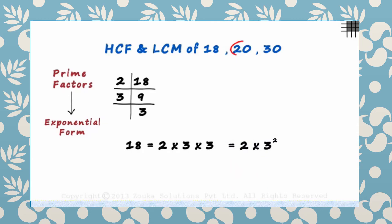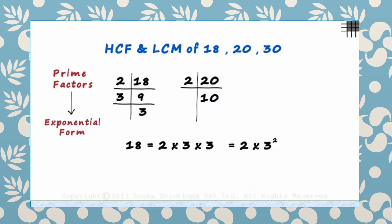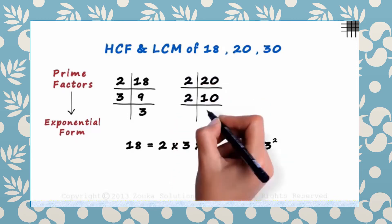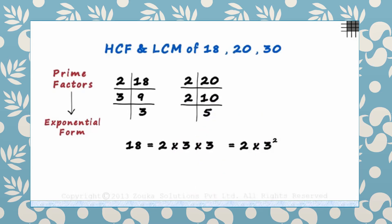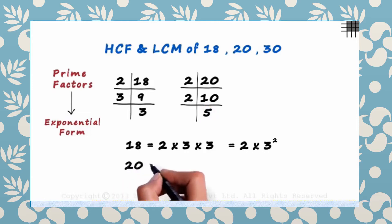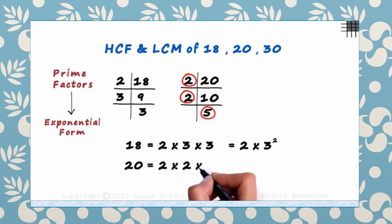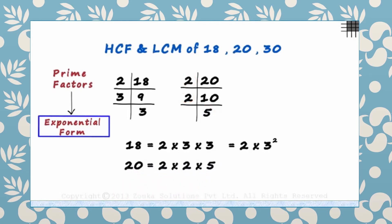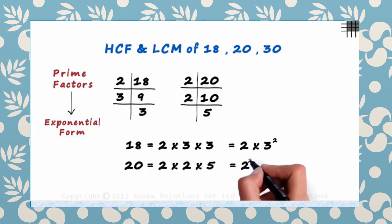Let's move on to the second number, which is 20. It is divisible by 2 and the quotient is 10, which is also divisible by 2 — 2 times 5 is 10. We stop here as we got a prime number. So 20 can be written as 2 times 2 times 5, and in exponential form as 2 squared multiplied by 5.